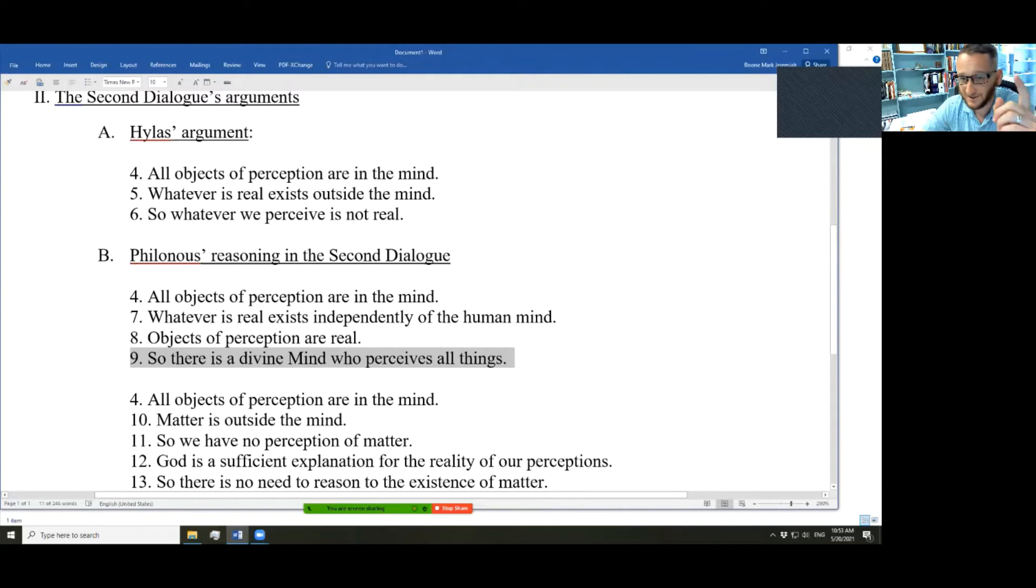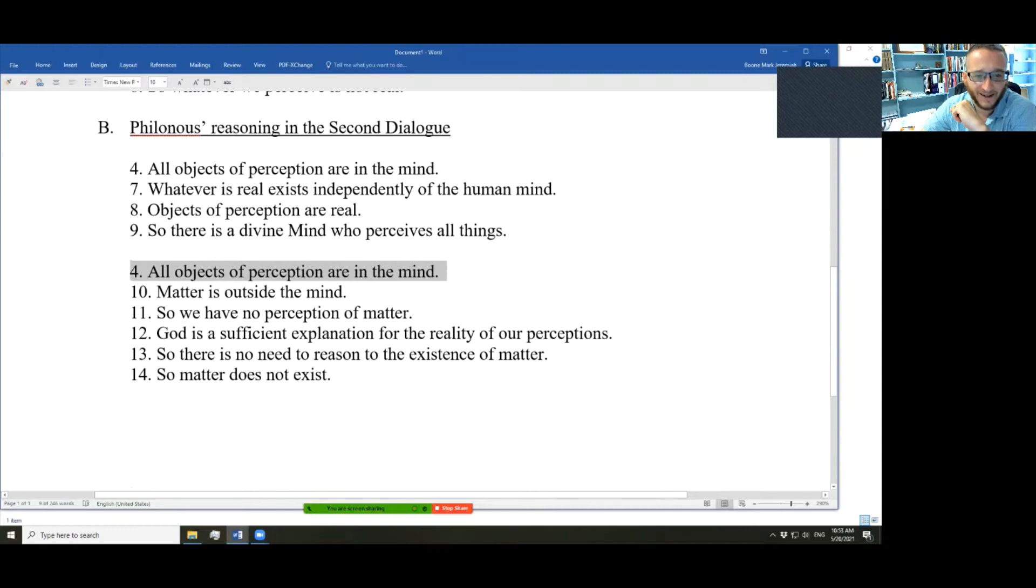Now, here's another argument. Second dialogue still. Again, all objects of perception are in the mind. And matter, as Hylas understands it, is something that exists outside the mind. And we have no perception of matter, because all objects of perception are in the mind. But matter is not there. And if we have no perception of matter, then it turns out matter does not exist. You have a couple of the premises to help get you there. Well, actually, a premise and a subconclusion, if you want to be technical. We have no perception of matter.